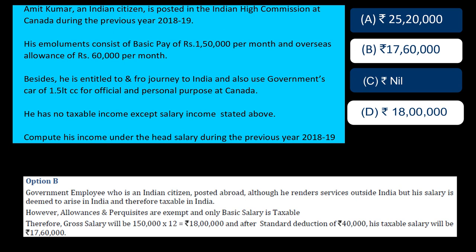You will get only the standard deduction of Rs. 40,000. So the answer is B — Rs. 18,00,000 minus Rs. 40,000, that is Rs. 17,60,000. I'm sure you got MCQ number 1. Now proceed to MCQ number 2.